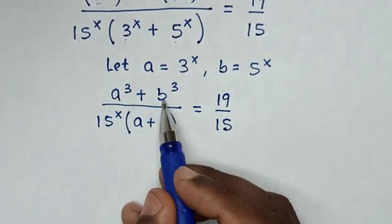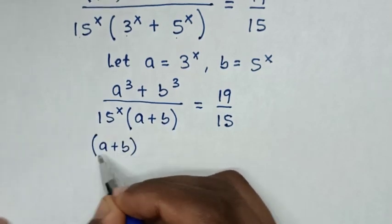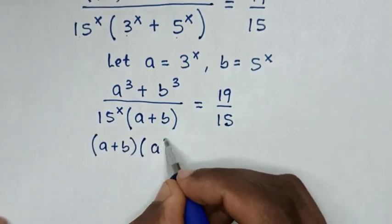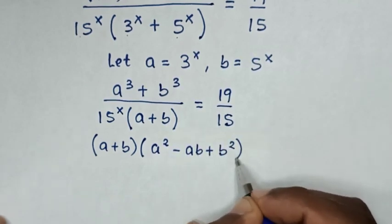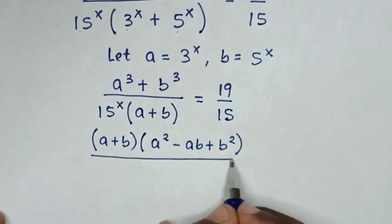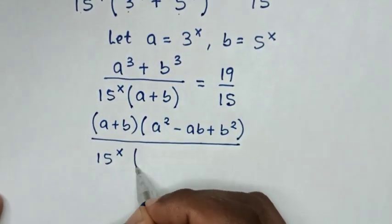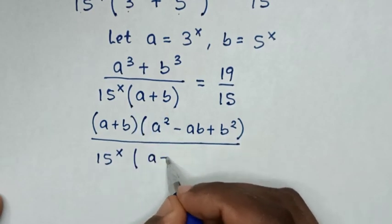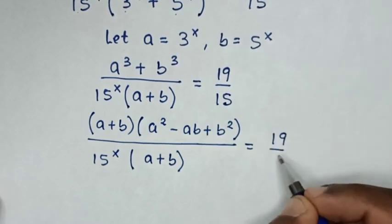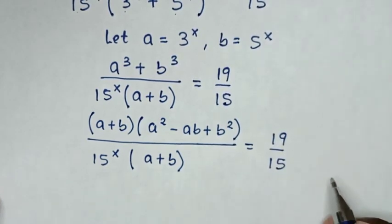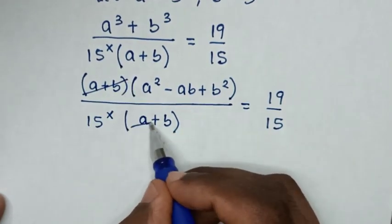From here, a³ plus b³ is the same as (a + b)(a² − ab + b²). So the numerator becomes (a + b)(a² − ab + b²), over 15^x times (a + b). In the next step, we simplify: (a + b) cancels with (a + b), leaving (a² − ab + b²) over 15^x equals 19 over 15.